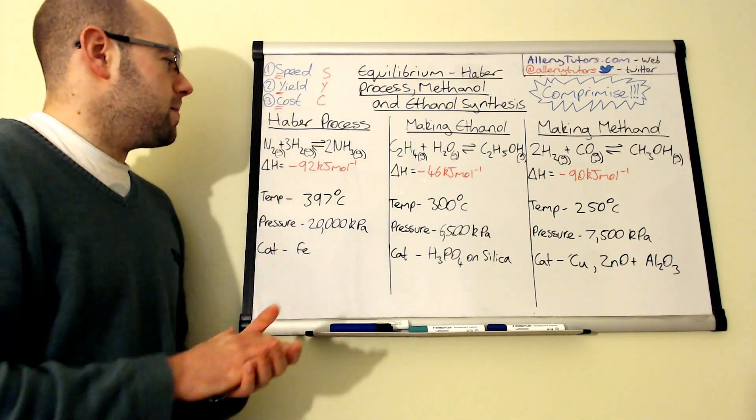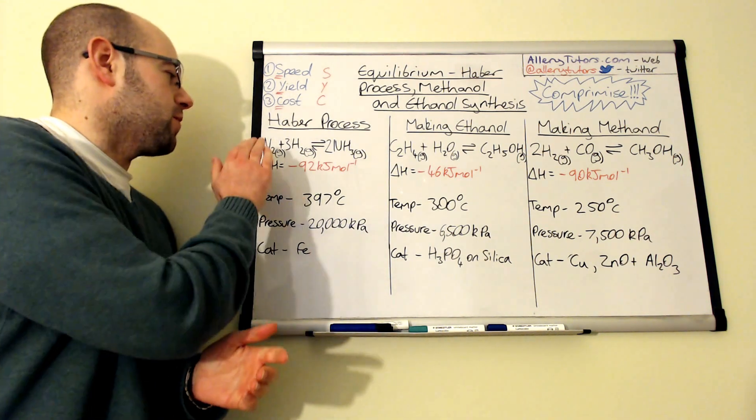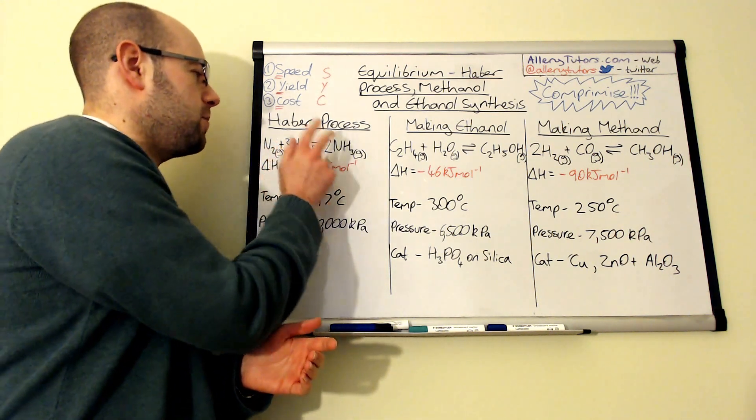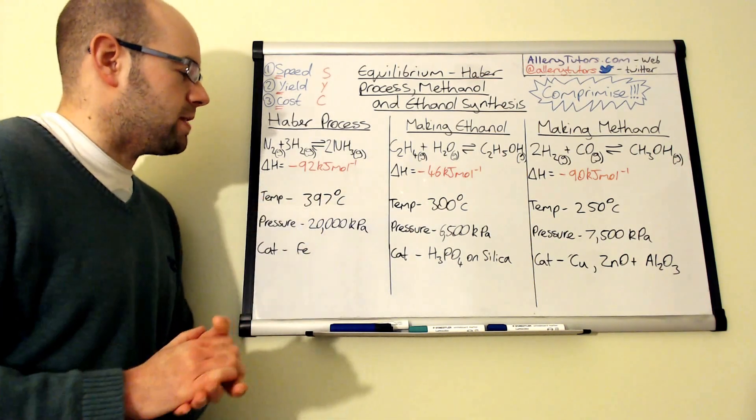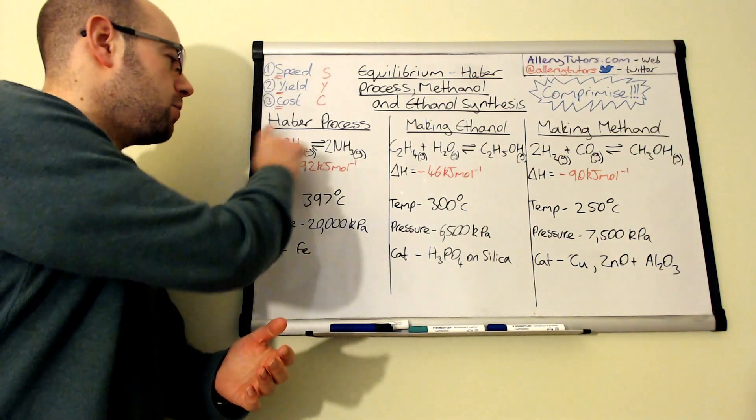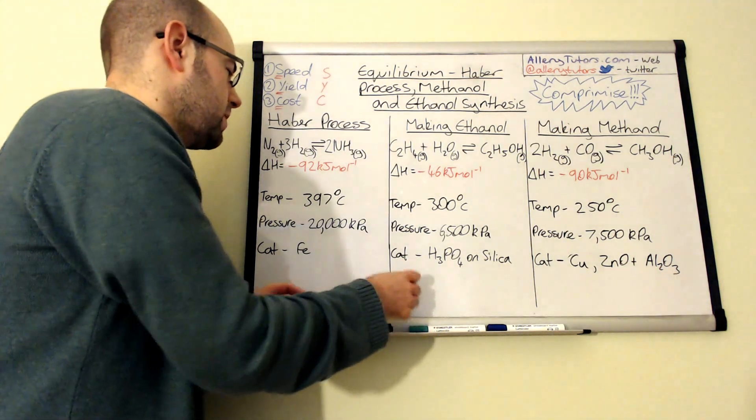So the Haber process works in a really simple way: we've got nitrogen, we've got hydrogen, and we make ammonia which is NH3. Now you can see that this reaction is exothermic going in the forward direction.